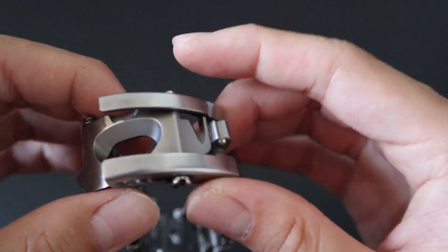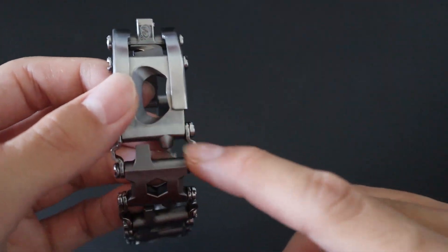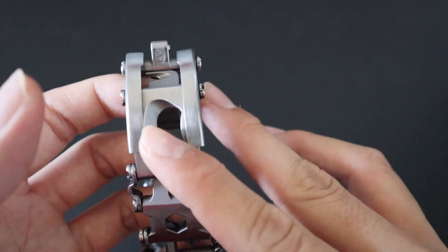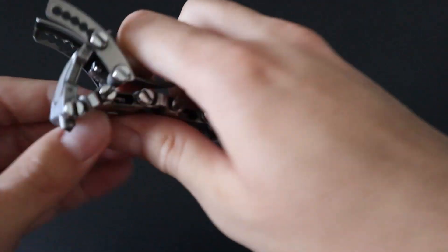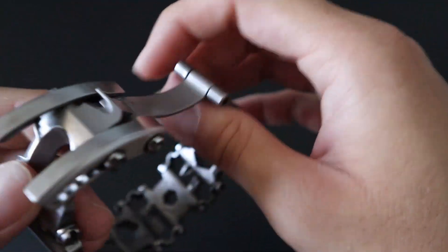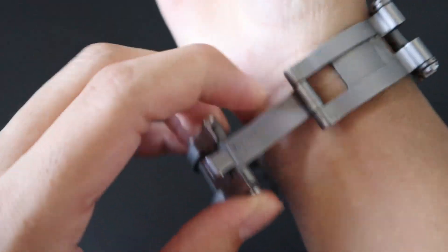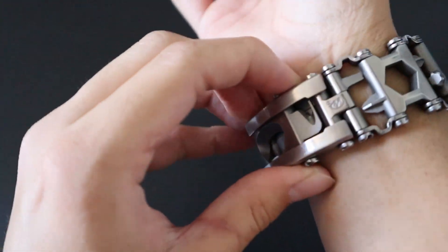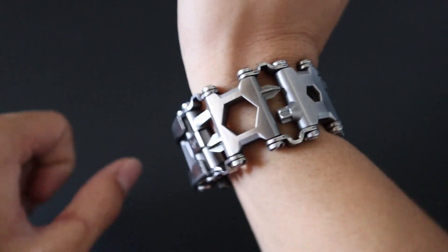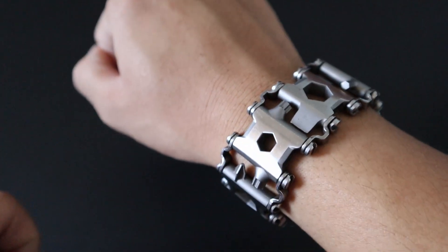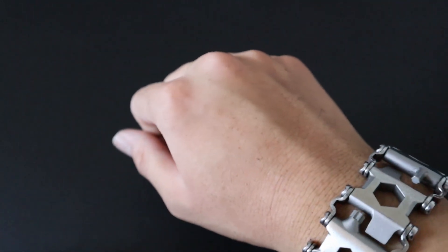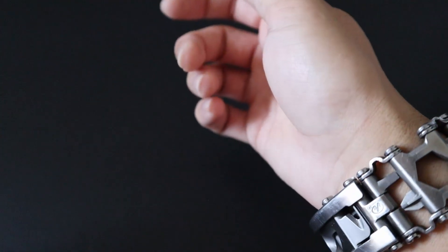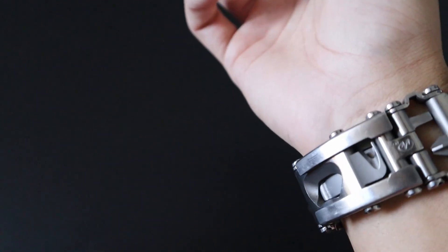And one of the coolest tools on the Leatherman tread tempo is its bottle opener. The standard tread, in order to use the bottle opener, you have to take it off and the bottle opener is built into the side. But for the tread tempo, the bottle opener is much cooler. You actually need to use it while you're wearing it. You put it on like here, bottle opener is right there, put your wrist over the bottle and pop it off. It's a really cool party trick. And I love the form factor of the bottle opener. Everyone's always amazed whenever I open a bottle with my wrist.